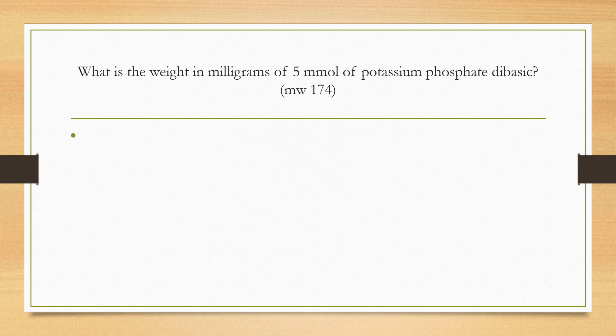Now let's look at another problem. What is the weight in milligrams of 5 millimoles of potassium phosphate dibasic, molecular weight 174? So here, what do we have and what is being asked? We have the molecular weight. That means one mole is 174 grams. That also means one millimole of potassium phosphate dibasic is 174 milligrams.